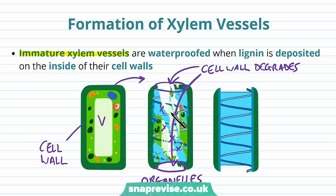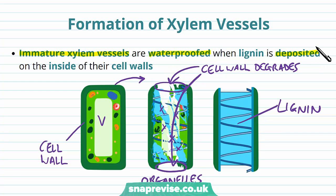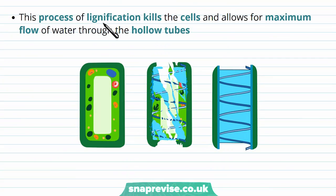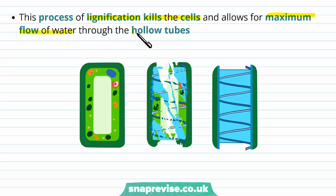Finally, after the cytoplasm and organelles have all disappeared, lignin is deposited in a spiral or ring-like fashion to make the vessel waterproof. The polysaccharide lignin is deposited on the inside of the remaining cell walls. Lignification is the word used to describe this deposition process. As the lignin is deposited on the cell wall and around the tube, this actually kills the cell, forming the dead cell that makes up the xylem vessel, allowing for maximum flow of water through these hollow tubes.